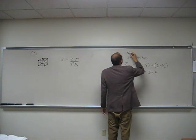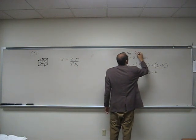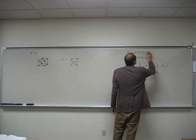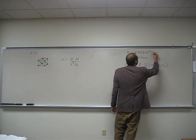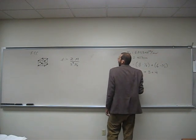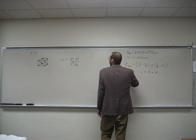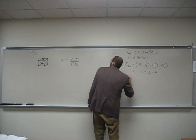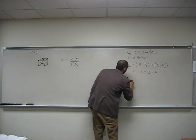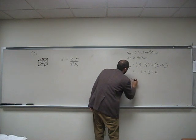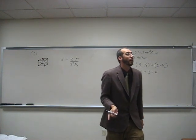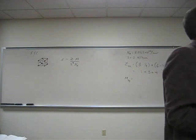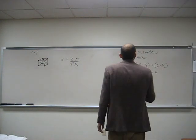So Avogadro's number is 6.022 times 10 to the 23rd per mole. Z we've got, S we've got, and the molar mass of silver. Well, how do we find that? We look it up on the periodic table. We'll say 107.9.